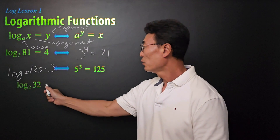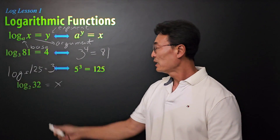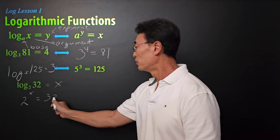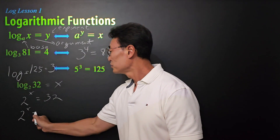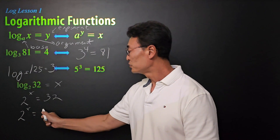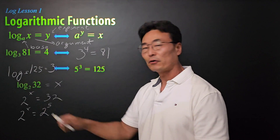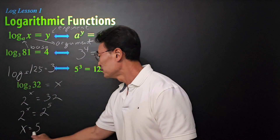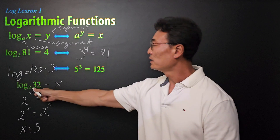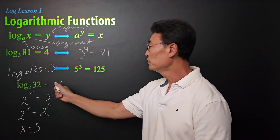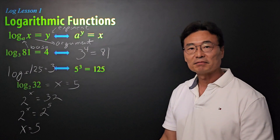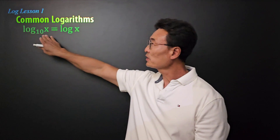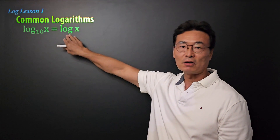Here's our final example. If we have log base 2 of 32 and we want to find out what that equals, we set it equal to x. This becomes 2 to the x equals 32. We change 32 into 2 to the fifth power, and since we have the same base, x equals 5. So log base 2 of 32 equals 5.